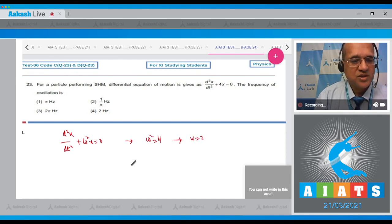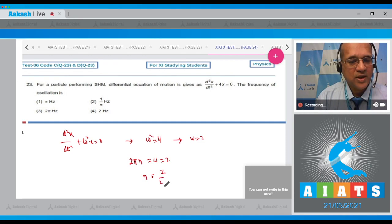And if you compare with the given equation, omega squared is equal to 4, therefore omega comes to be 2. And what is omega equal to? 2 pi n. So 2 pi n equals omega, which is given as 2, then what is n? n is equal to 2 by 2 pi, that is 1 by pi hertz. Therefore the correct option is option number 2.